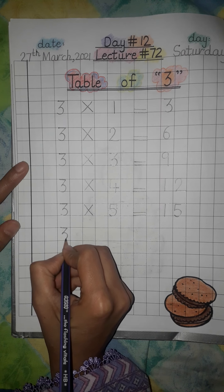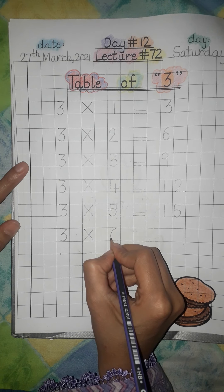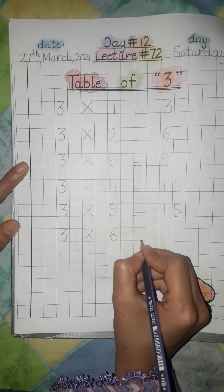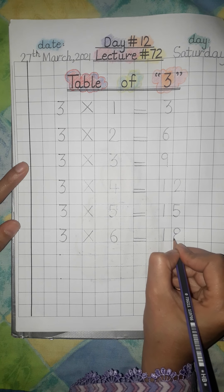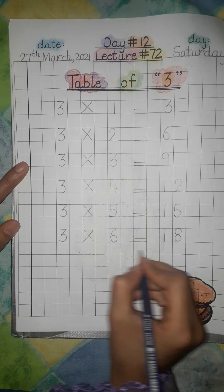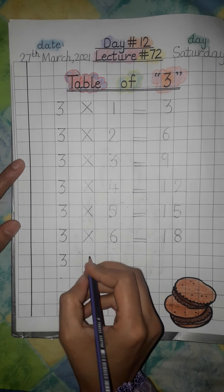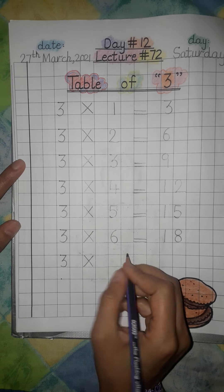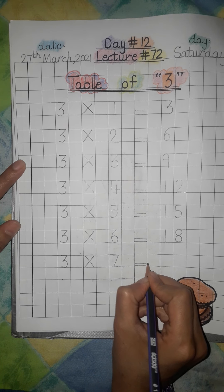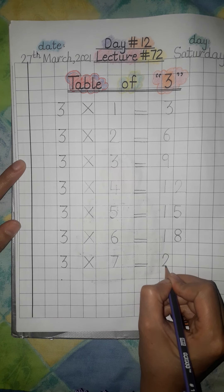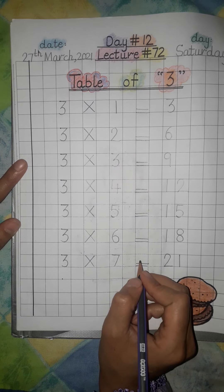Three multiply six is equal to eighteen. Three sixes are eighteen. Three multiply seven is equal to twenty one. Three sevens are twenty one.